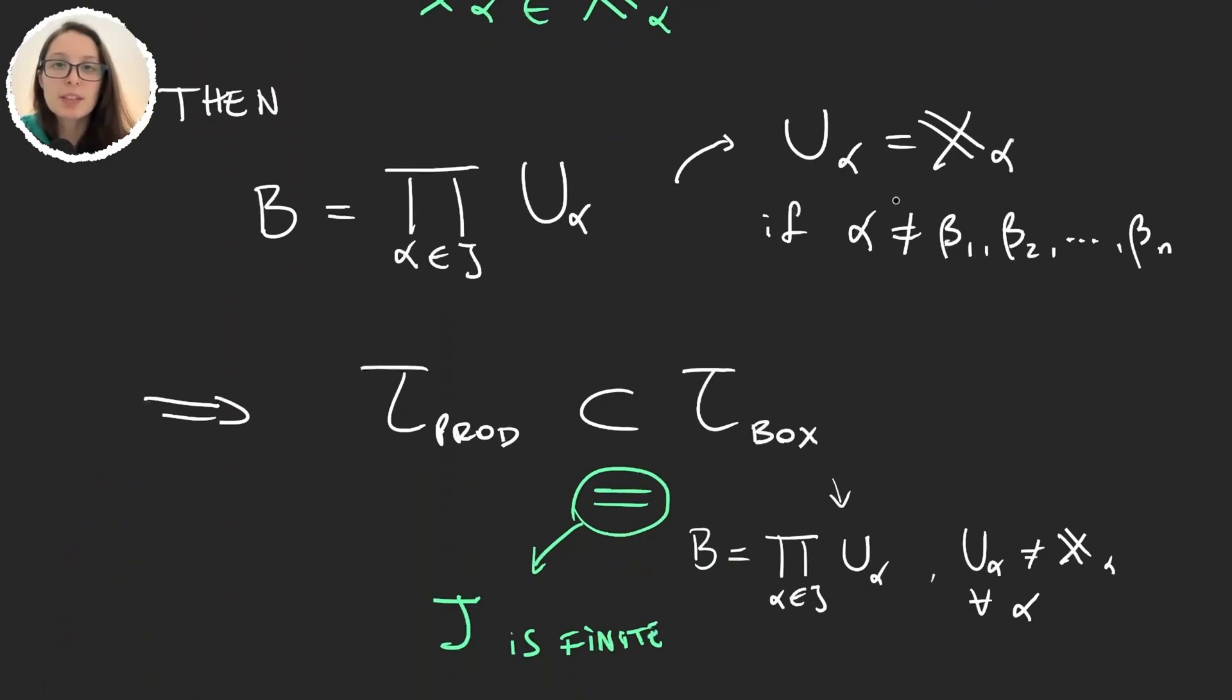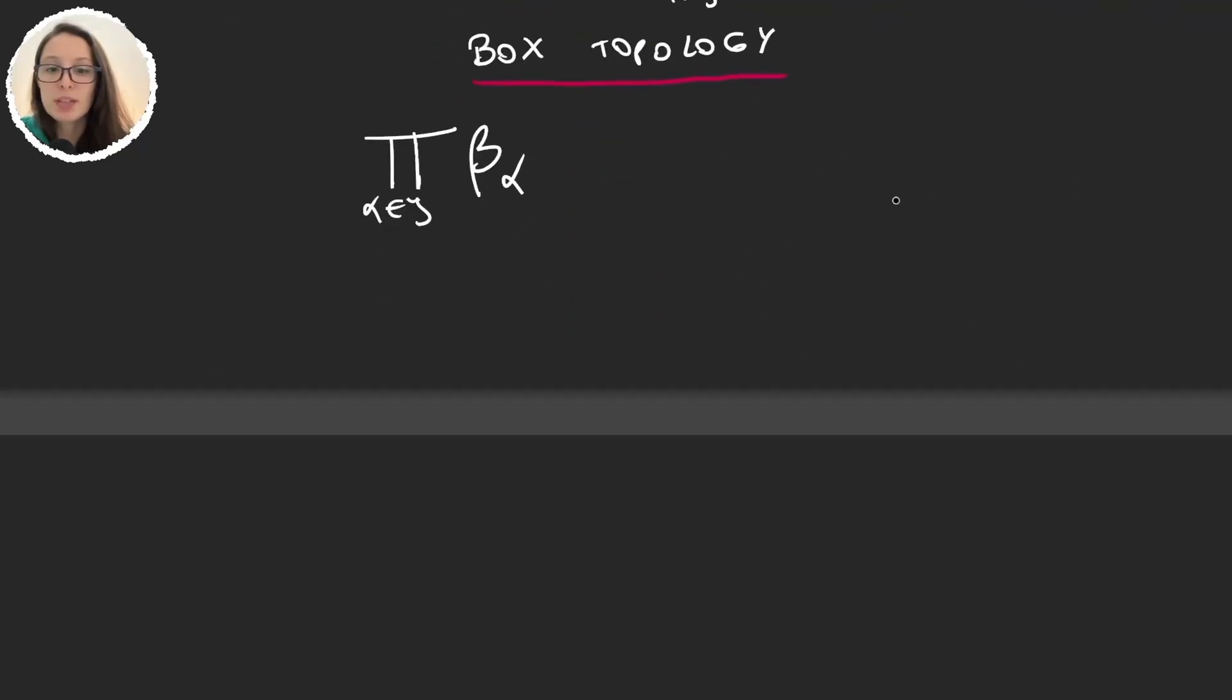So why is it that we actually prefer working with the product and not the box? Because any time you hear the product space, it will always be working with the product topology. So why is this?